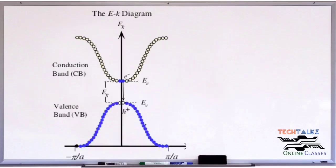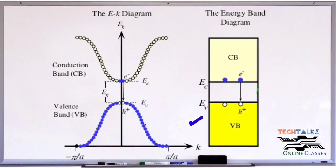From the E-k diagram, this corresponds to the valence band, and this corresponds to the conduction band. This is the minimum conduction band energy level EC, and this is the maximum valence band energy level EV, and this is the energy band gap EG.